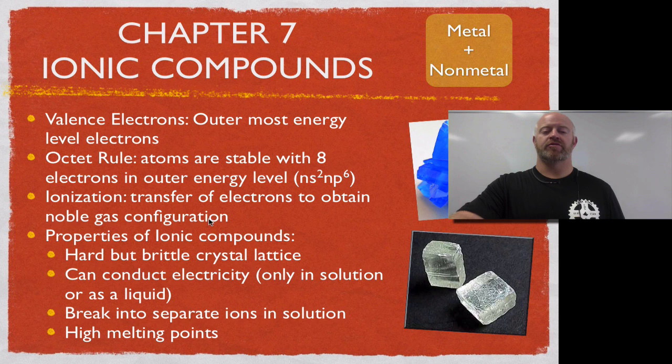What that does is an atom that has too many electrons, it reduces them down so they have the right number of eight. And for those who don't have enough, they gain them to get to the right number of eight. Now when we deal with ionic compounds, we have some properties that we can identify with them.